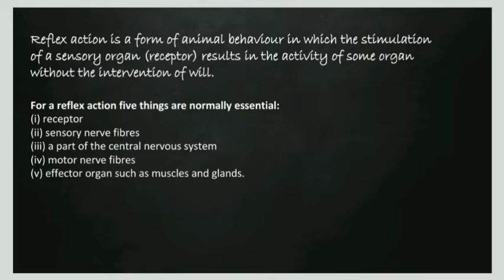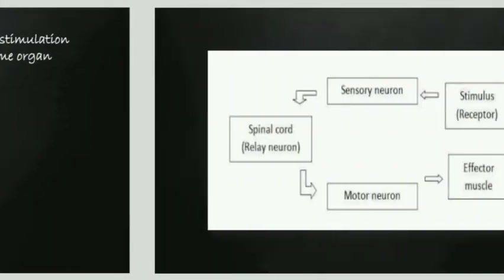For a reflex action, five things are normally essential: a receptor, sensory nerve fibers, a part of the central nervous system, motor nerve fibers, and effector organs such as muscles and glands.